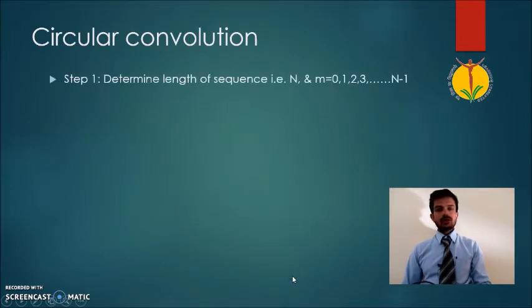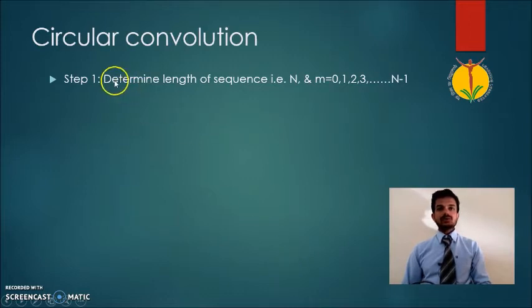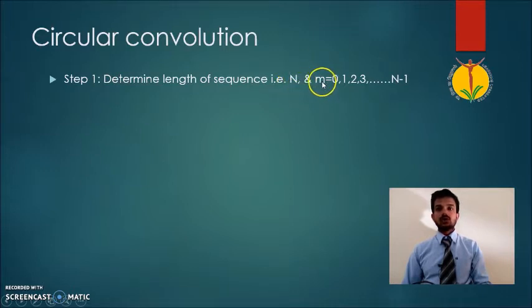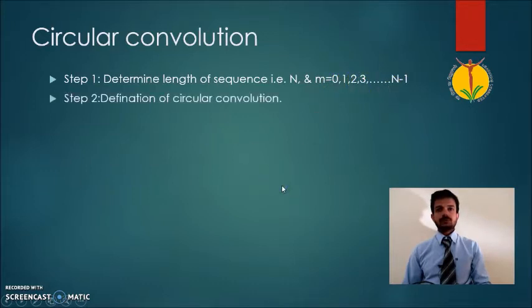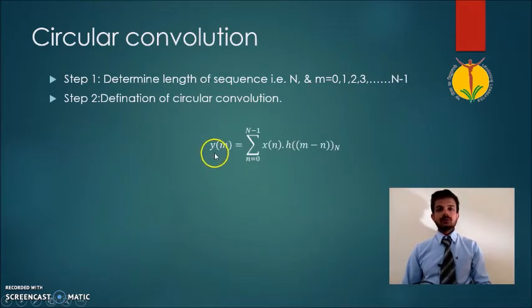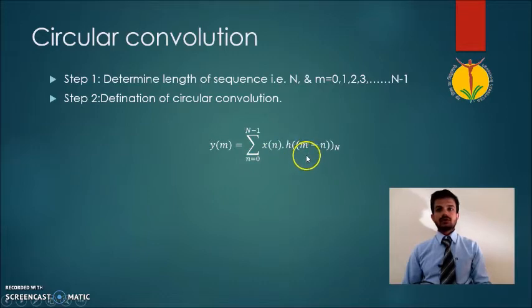Let us see how to determine the circular convolution of a given sequence. First, we have to determine the length of the sequence, that is capital N, and we use values of m starting from 0, 1, 2, 3, up to N minus 1. Secondly, the circular convolution is defined mathematically as y of n equals summation from n equal to 0 up to N minus 1 of x of n into h of m minus n.